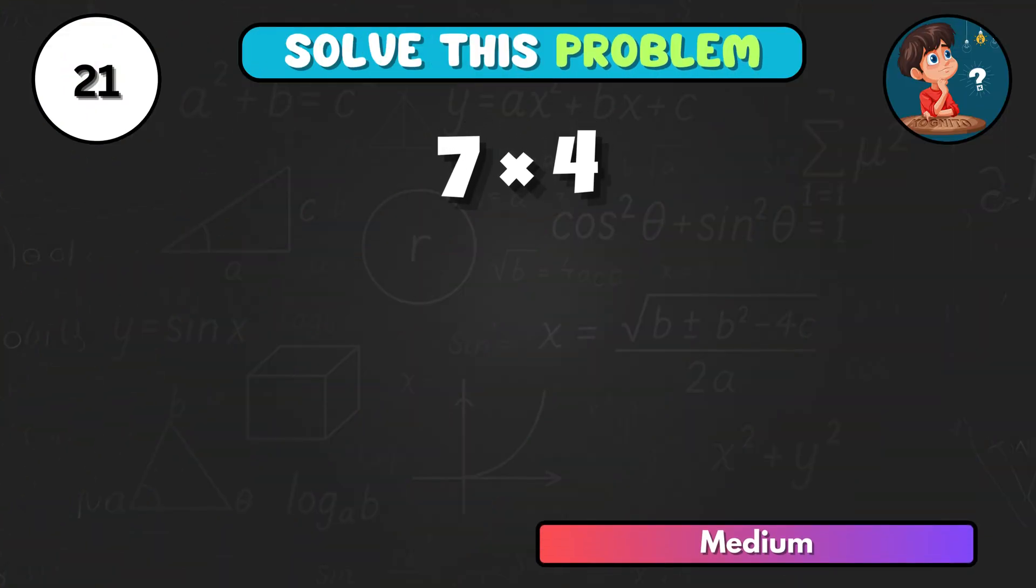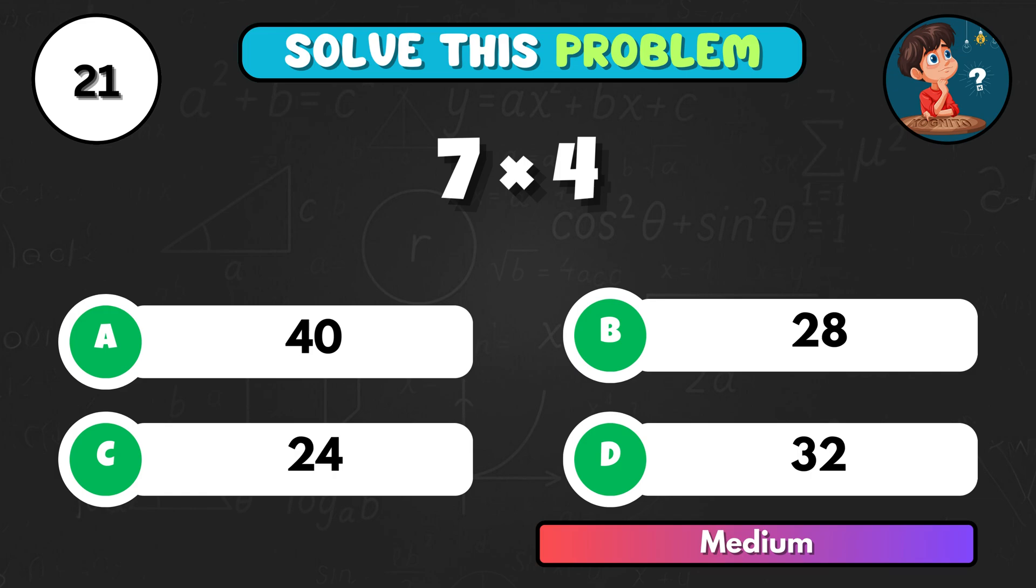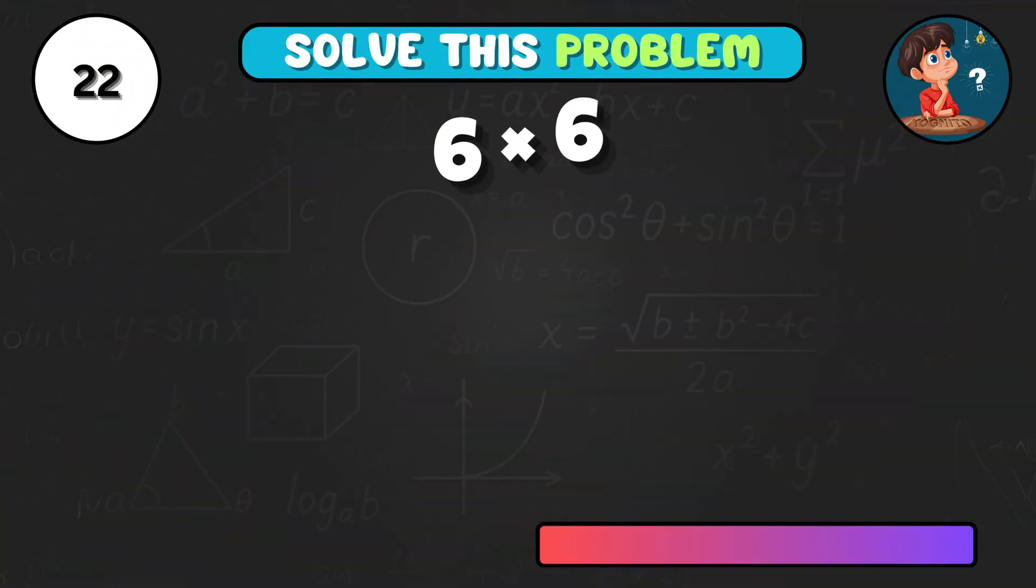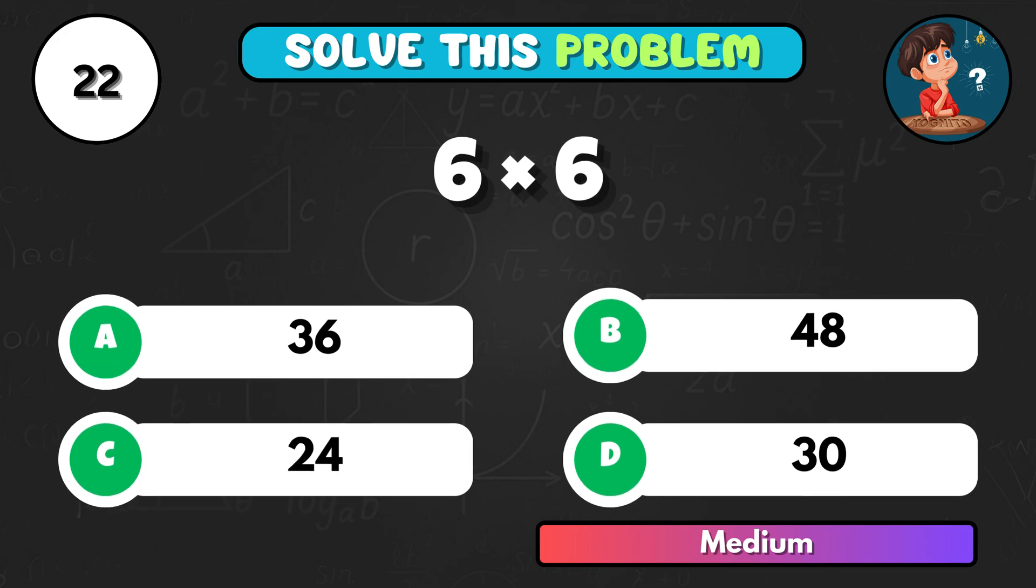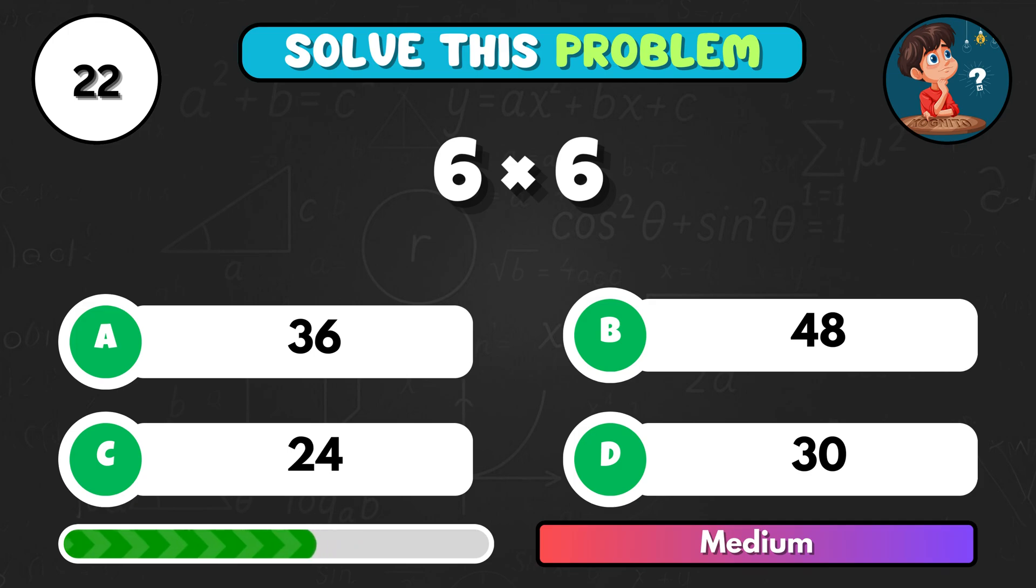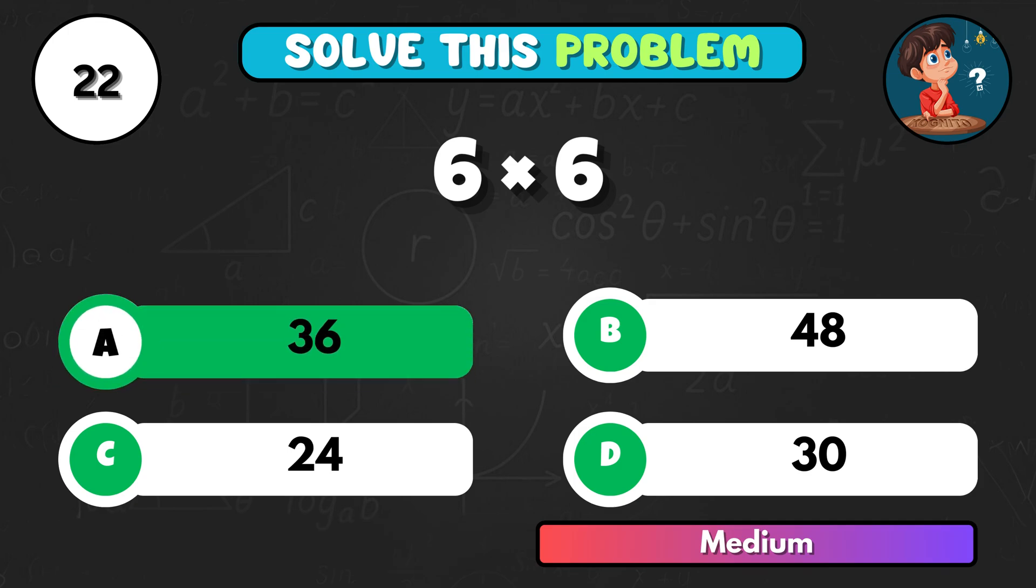What's 7 times 4? Shout it out. That's B, 28. Memory test. 6 times 6. What's the answer? It's A, 36.